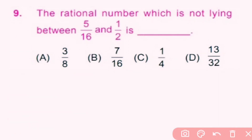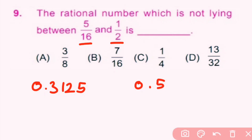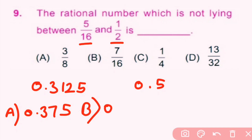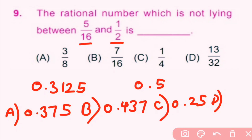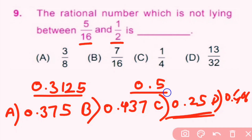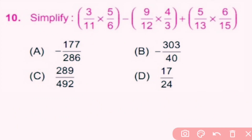Question 9: Which rational number is not lying between 5/16 and 1/2? Converting to decimals: 5/16 = 0.3125 and 1/2 = 0.5. Option A: 3/8 = 0.375, Option B: 7/16 = 0.4375, Option C: 1/4 = 0.25, Option D: 13/32 = 0.406. Only Option C (0.25) is not between 0.3125 and 0.5, so Option C is correct.